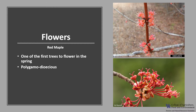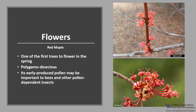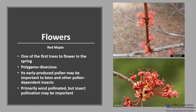The top photo shows male flowers and the bottom photo shows female flowers. Because of the abundance and wide distribution of red maple, its early produced pollen may be important for bees and other pollen dependent insects. Red maple is primarily wind pollinated, but insect pollination is reported to be important as many insects, especially bees, visit the flowers.